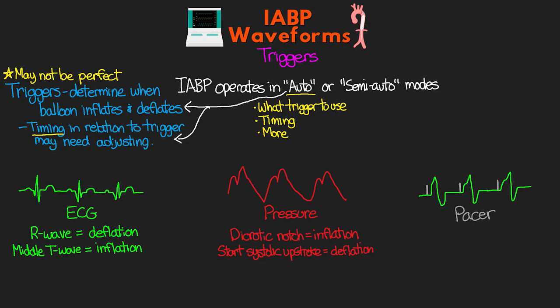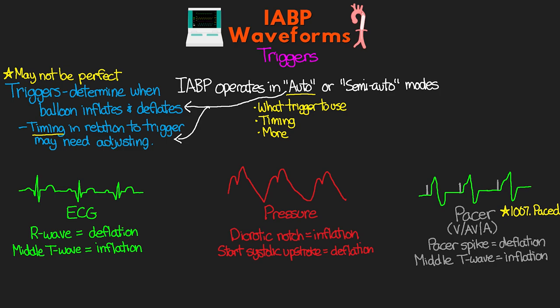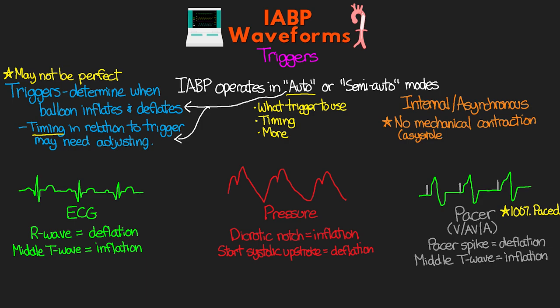Another way to trigger the balloon pump is with the pacer. Patients must be 100% paced in order to use these triggers. There are options for V pacing, AV pacing, and A pacing by itself. The pacer spike is used to trigger deflation, and inflation remains at the middle of the T wave just like the regular ECG trigger. Finally, there is an internal or asynchronous mode, which is only to be used when there is no mechanical contraction — in the ICU this means asystole, or when a patient is on bypass in the OR. This mode runs at a set 80 beats per minute asynchronously. Switching to pressure trigger is actually the optimal mode if a patient is in cardiac arrest.